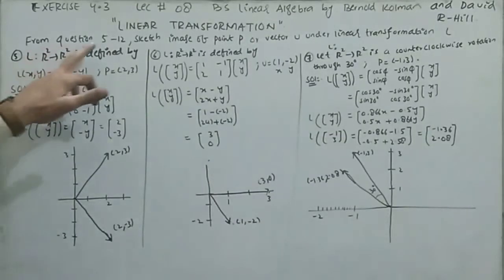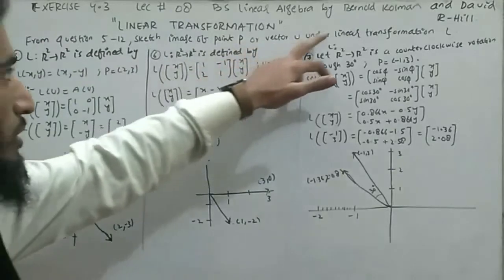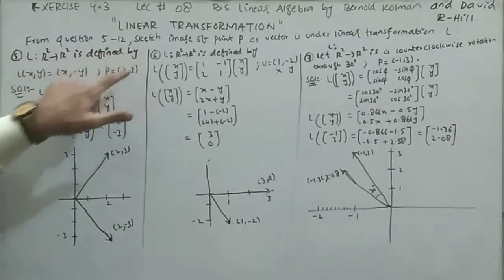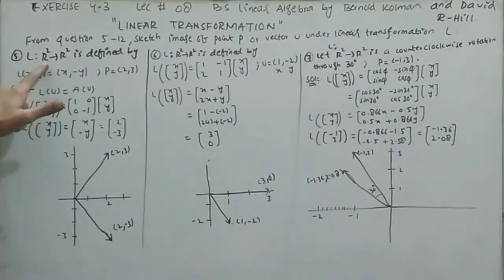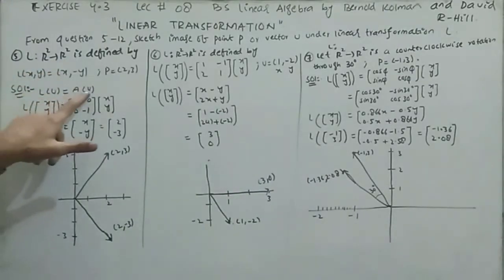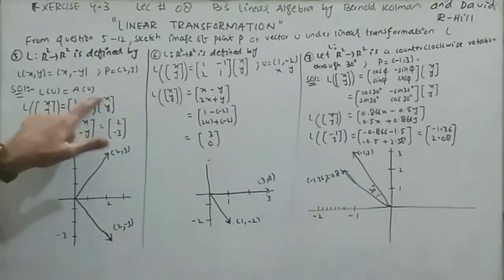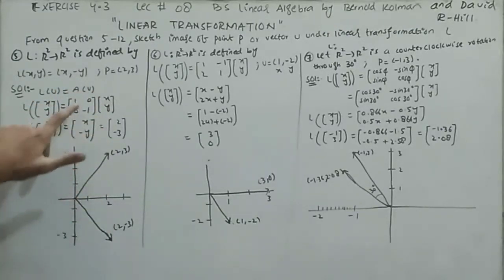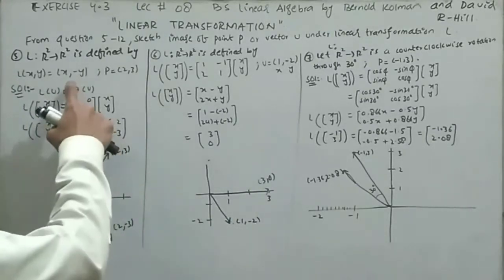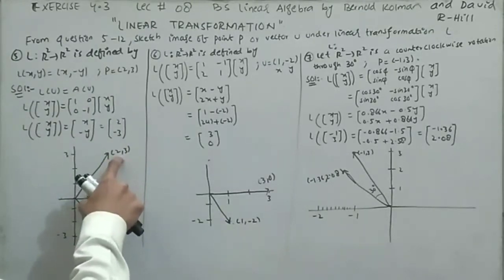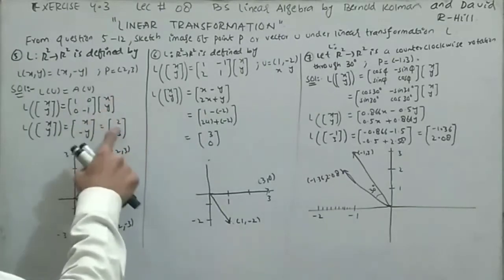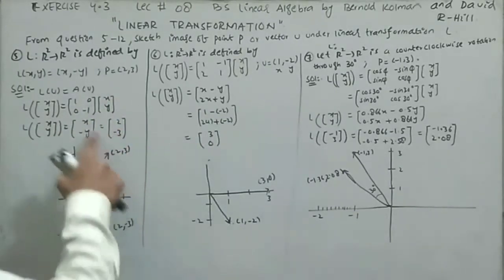Now from questions 5 to 12, we sketch the image of a point or vector u under the linear transformation L. For question 5, L is a linear transformation from R² to R², defined by L(u) = Au where A = [[1,0],[0,-1]]. Multiplying gives (x, -y). The initial point is (2, 3) and the image is (2, -3), which we plot on the graph.